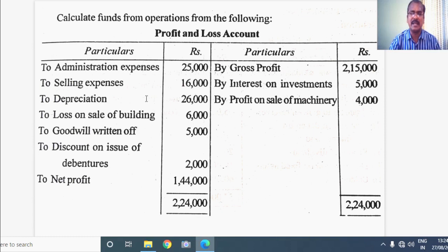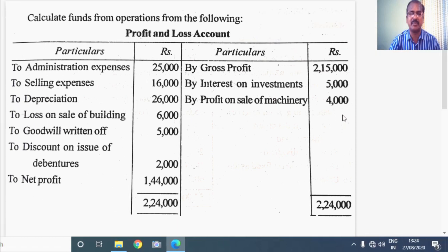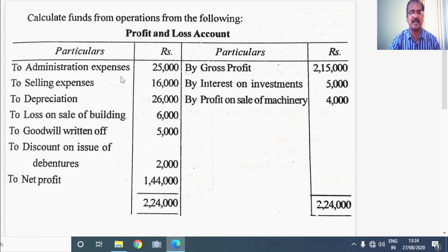Among the expenses listed in the debit side of the P&L account, you find administration expenses. Administration expenses and selling expenses both are operating as well as fund expenses. Therefore, we should not reverse them. We should not consider them for adjustment with the net profit to calculate funds from operations. I have explained them in detail in the first video.